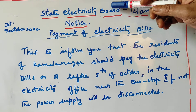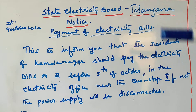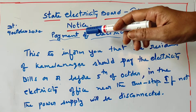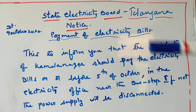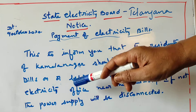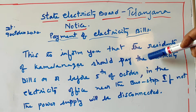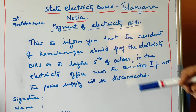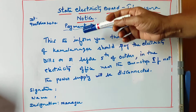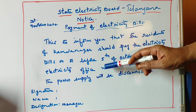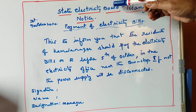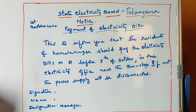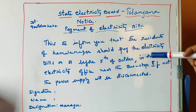So here, the first W is the State Electricity Board — who is giving the notice, the issuing authority. The second W is the subject — payment of electricity bills. The third W is whom it addresses — the residents of Kamalnagar. The fourth W is who is issuing that — the Manager. The fifth W is where to submit — the electricity office near the bus stop. So all five W's are included, making this a correct notice. All of you copy this in your notebooks. Thank you.